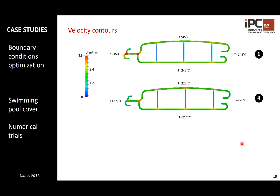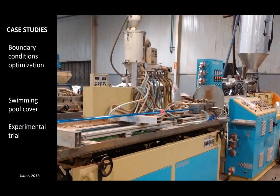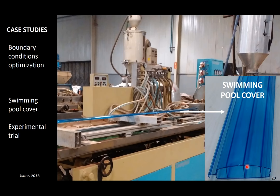This slide illustrates the initial trial with uniform temperature distribution and the last numerical trial, which — as you can see from the velocity distribution — is much better in terms of flow balance. The global objective function clearly quantifies this, showing a significant improvement from the initial uniform temperature distribution to the last trial. You can also see the extrusion line operating and producing the desired swimming pool cover profile with the required dimensions from the company.